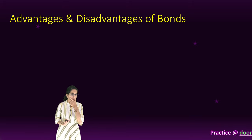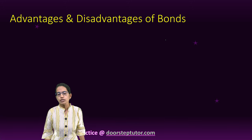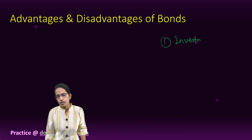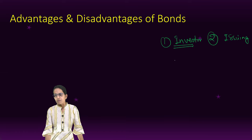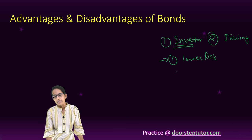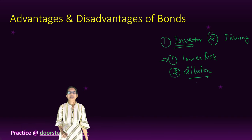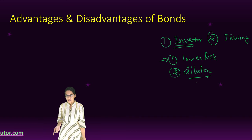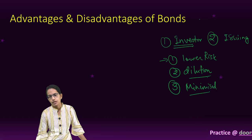So those are the types of convertible bonds. Coming to advantages and disadvantages — advantages would be on two sides: the investor and the issuing authority. On the side of the investor, the benefit is first lower risk. Second, if there is a company dilution or the company defaults, investors would be given priority. And thirdly, the risk is minimized because investment is guaranteed.